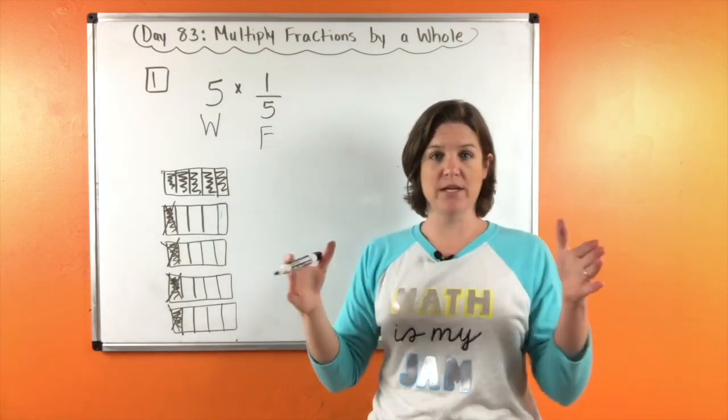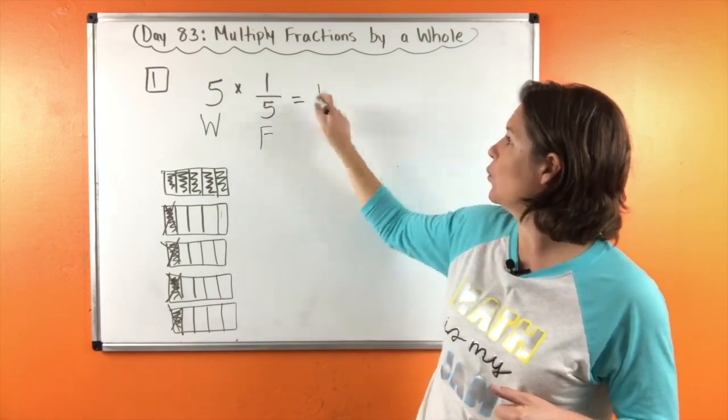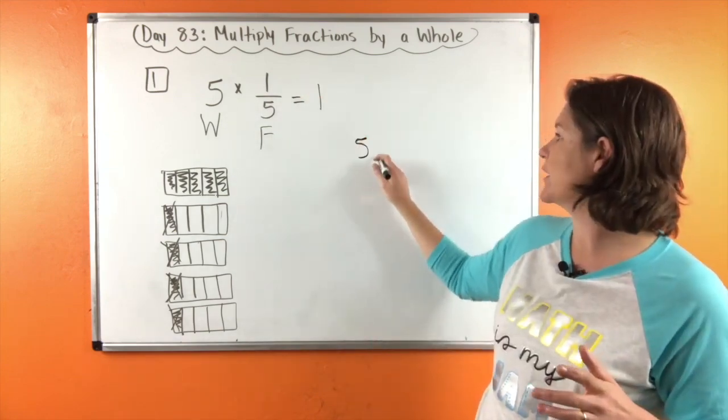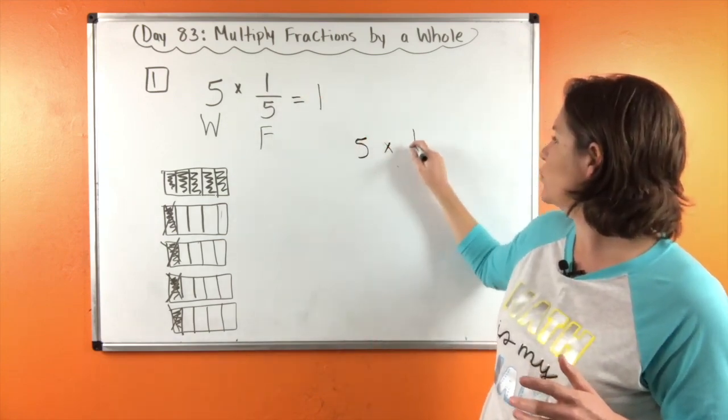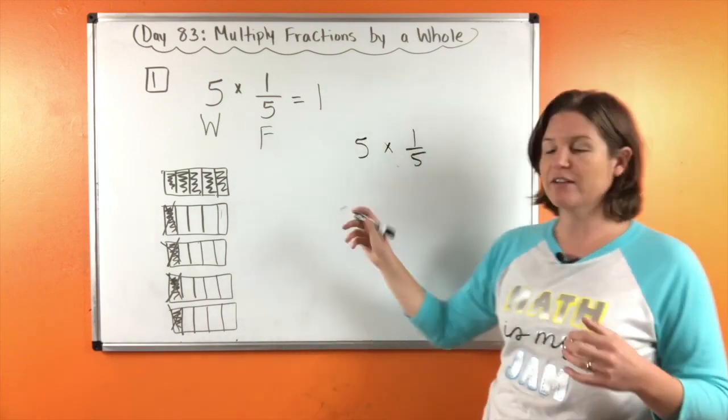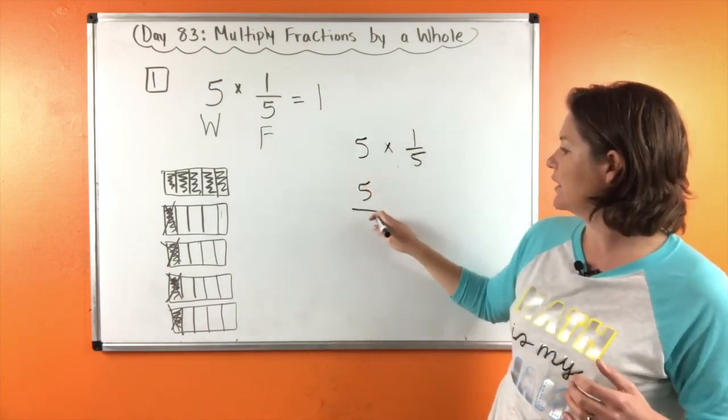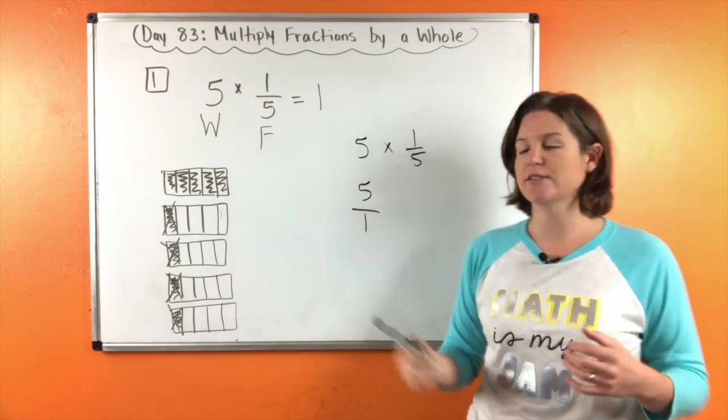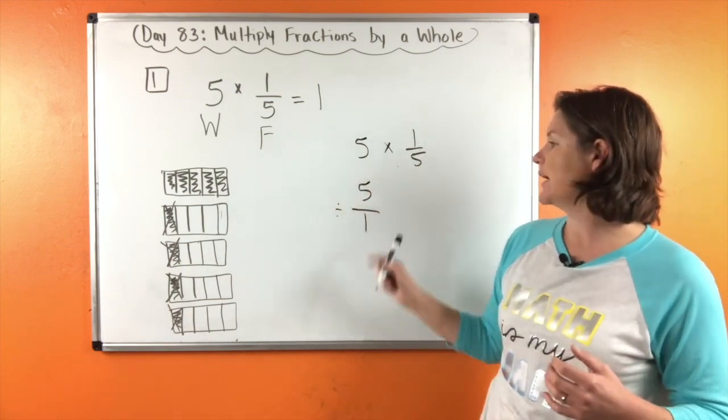Here's the math that's going on: five times one-fifth. We're going to change this five to five in the numerator over one, because this really means divided by, so five divided by one equals five, right? Now we're changing that so we can multiply our fractions.